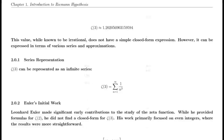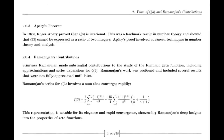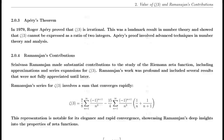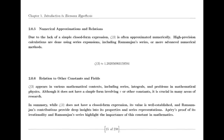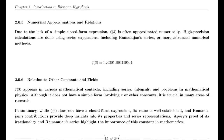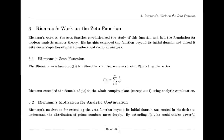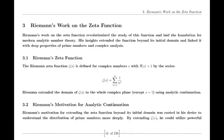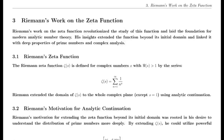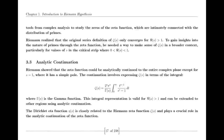Riemann proposed that all non-trivial zeros of the zeta function lie on the critical line where the real part of s is one-half. This hypothesis has profound implications for number theory, particularly in understanding the distribution of prime numbers. Despite extensive numerical evidence supporting the hypothesis, a formal proof or disproof remains one of the greatest challenges in mathematics.